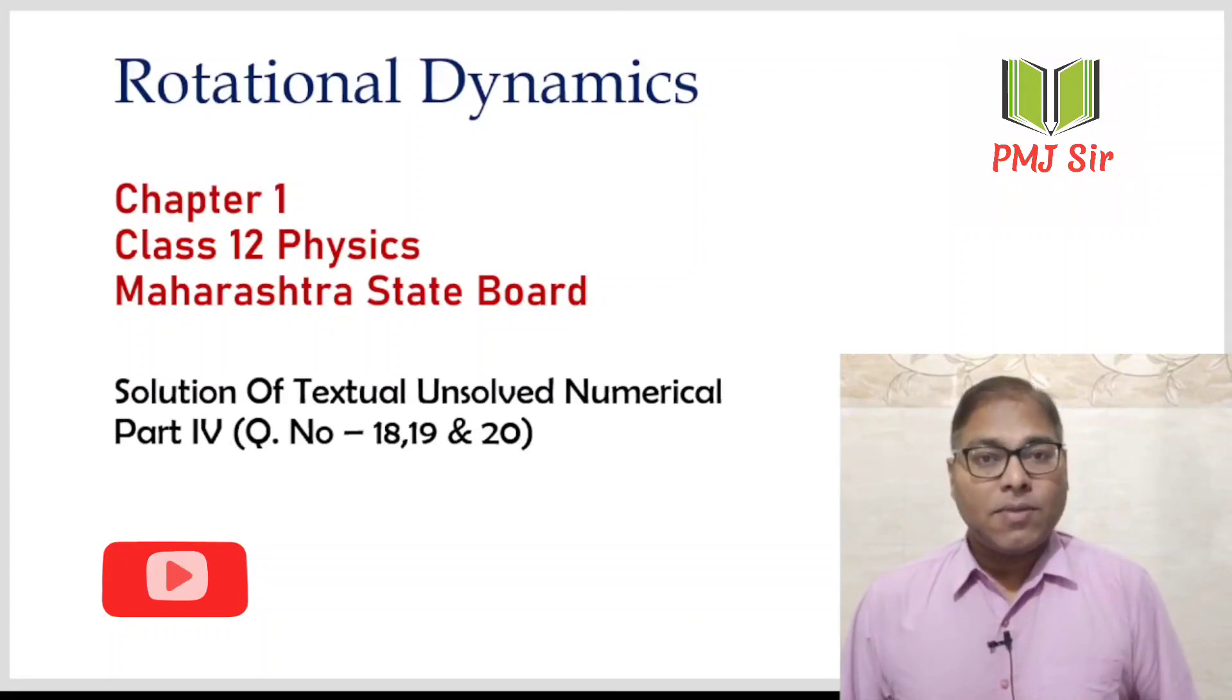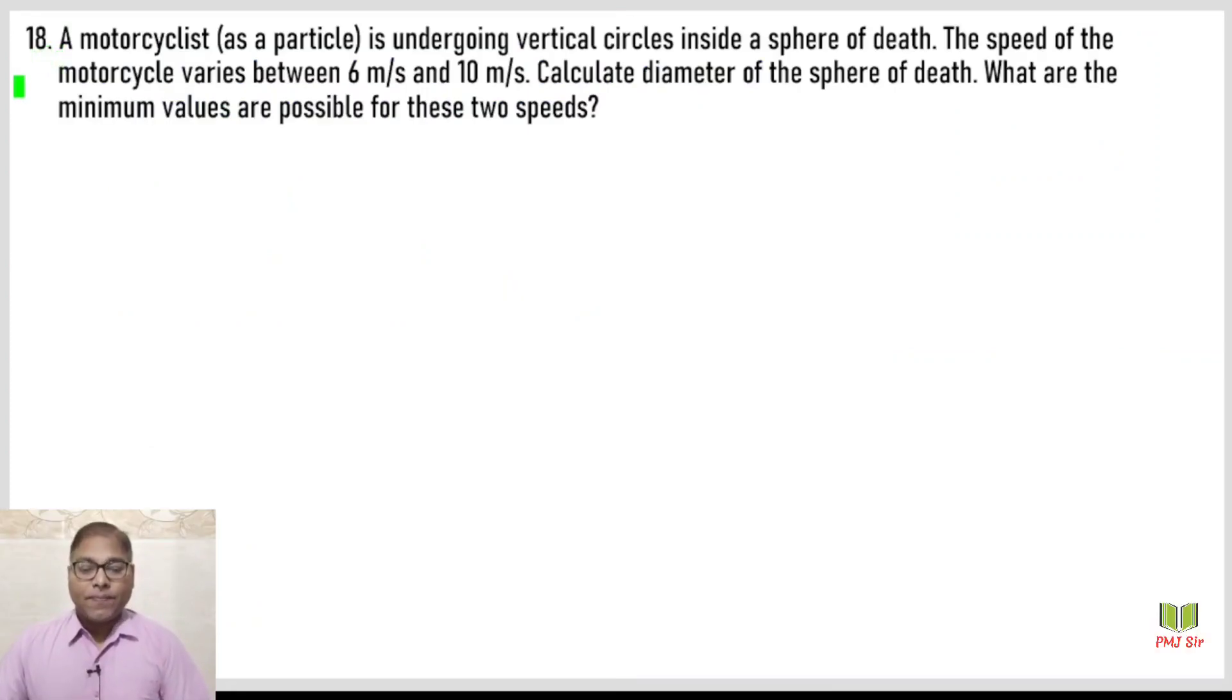Hello everyone and welcome back to the channel PMJ sir. We have completed till question number 17, so let us start with question number 18. A motorcyclist as a particle is undergoing vertical circular motion inside a sphere of death. The speed of the motorcycle varies between 6 meter per second and 10 meter per second. Calculate the diameter of the sphere and what are the minimum values possible for these two speeds.